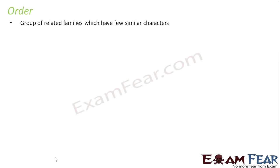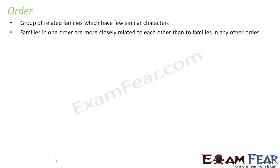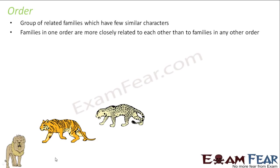The similarities are gradually decreasing. These are families which are related to each other and will have some similar characters. Families in an order are more closely related to each other than to families in any other order. Let us look at an example to understand this — we will follow the same example so that it becomes easier for you to compare and understand.